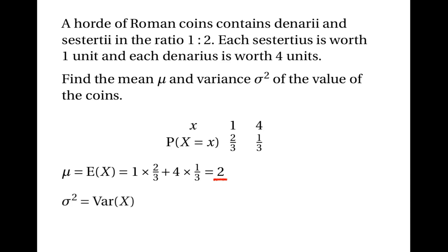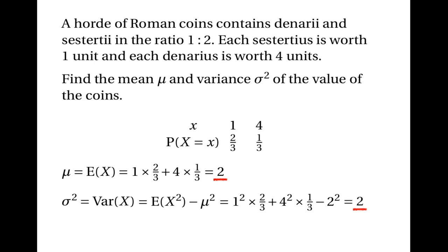The population variance, Var(X), is equal to the expected value of the squared value of the coin, take away the square of the mean. That's one squared times two thirds plus four squared times one third, take away the square of the mean. That also gives us the answer two. So in this case, both the population mean and the population variance are equal to two.